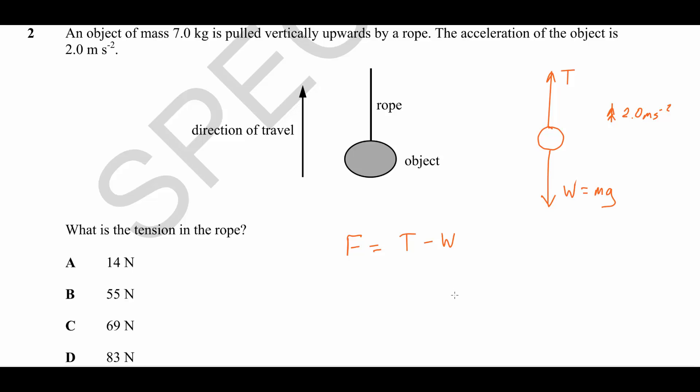So, for example, if tension and weight were equal, that would mean there'd be zero net force. And therefore, there would be no acceleration. If weight was bigger than tension, that would mean there would be a net force acting downwards, causing an acceleration downwards.